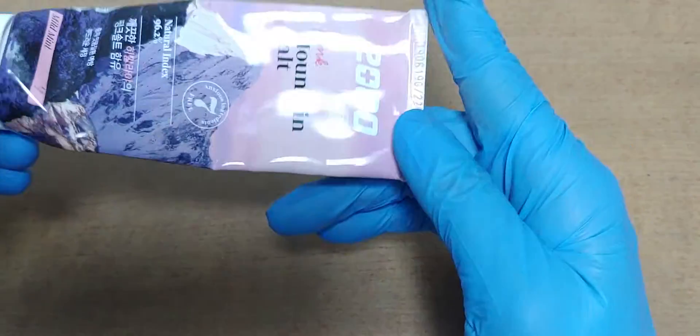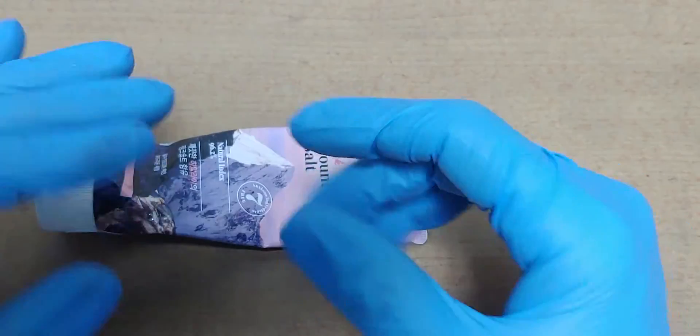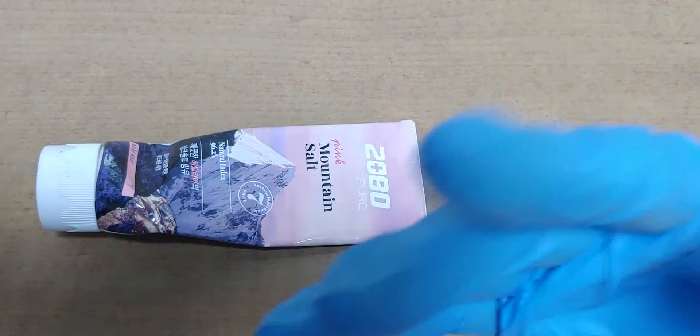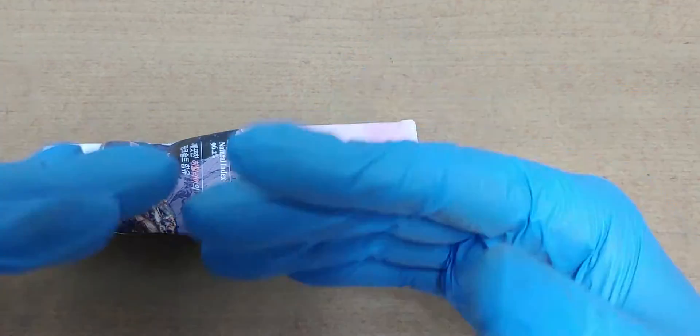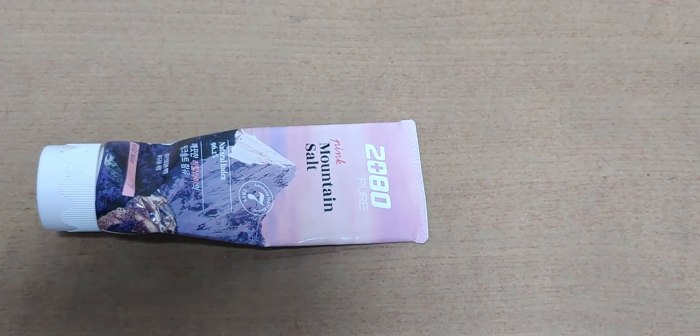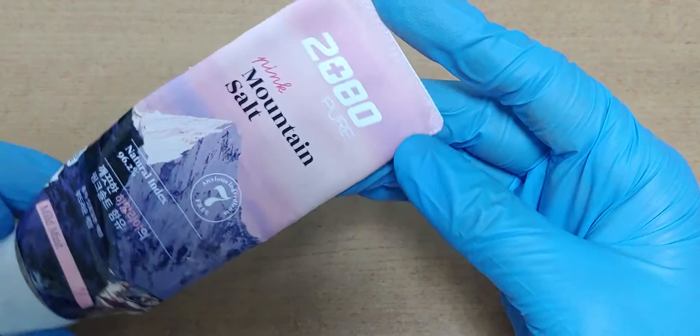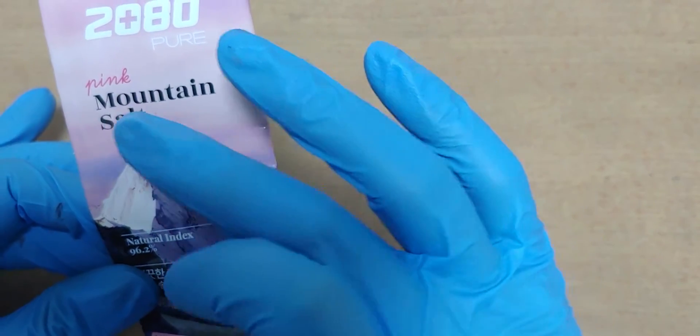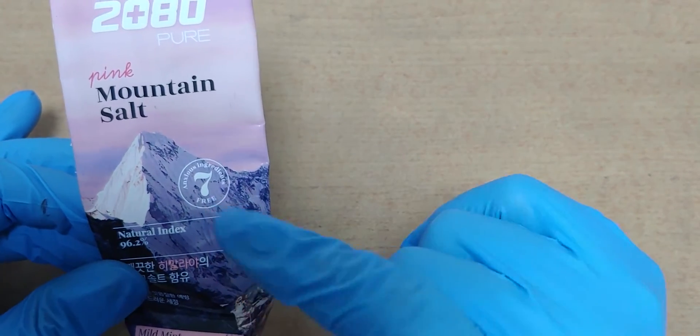And this is toothpaste, just toothpaste. Frankly speaking, I have experimented to make aluminum rechargeable battery over 10 years. I have used a lot of things, but this toothpaste which includes mountain salt is good, really good.